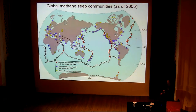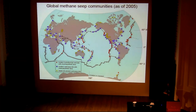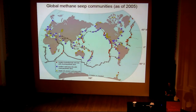Methane seeps and associated communities were only discovered in 1984 off Florida, marked here in blue squares. And since then, people have found methane seeps and associated communities around the edges of pretty much all of the world's continents. This is a compilation from 2005, and if we were to do that compilation now, we'd find many, many more blue squares all around the edges of the continents.